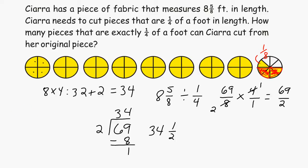But in this case we are not concerned with this leftover piece. So we want to eliminate that. We would say that Ciarra can get exactly 34 pieces that are 1/4 of a foot in length.